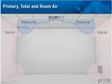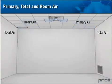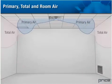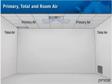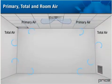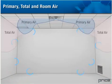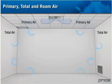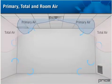Total air is the total volume of air in the room which is under the influence of the primary air stream. This is the primary air and the induced room air moving out from the air outlet. The total air is usually considered to be the volume of air within an envelope of fifty feet per minute or higher air velocity.